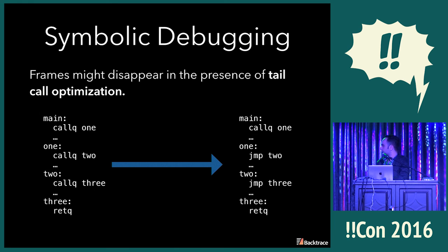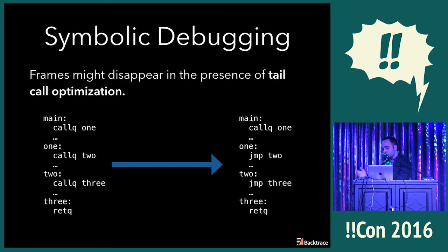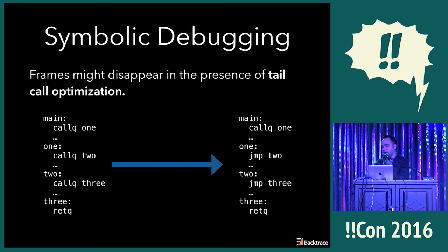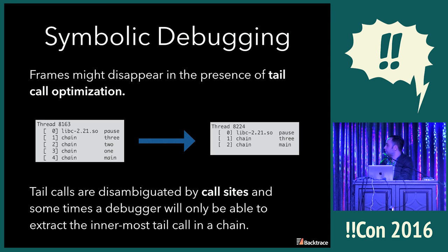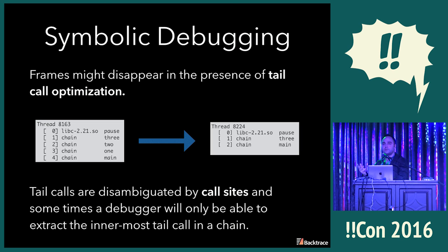Tail call optimization is fairly common. In some toy assembly we have main calling function one, which calls into three, etc. The call instruction on x86 saves information about the call stack so you can unwind and return to the caller using ret. The compiler determines we can fold these into jumps, so we don't actually require additional stack space — it changes those into jump instructions, at which point you really don't have any call stack information to unwind from. If you open this in a debugger without optimization everything looks sane, but with optimization everything except the innermost tail call is essentially gone, so the debugger has to do all sorts of weird heuristics to try to disambiguate what the origin of a call site could be.